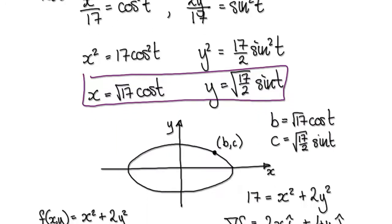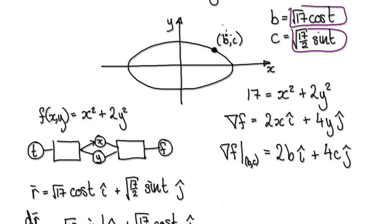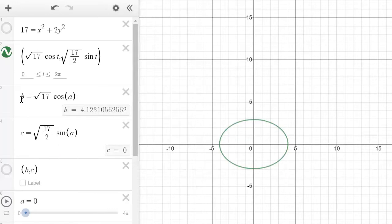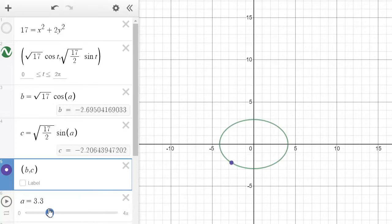Now we've got our ellipse in parametric form. For any given point, the particle is going to move around like this. Let's assign B as the x-component and C as the y-component, so this point is at (B, C). Jump to Desmos, assign B and C, add your particle at (B, C), and sliding 'a' lets you see the particle moving around the ellipse.